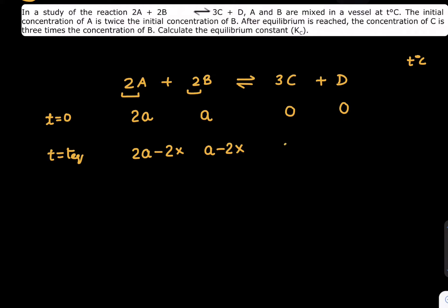How much C will form? It will form 3x. How much D can we expect? It will form x. Now we read this line again: concentration of C is three times the concentration of B. So what is the meaning? Concentration of C at equilibrium is three times the concentration of B at equilibrium.